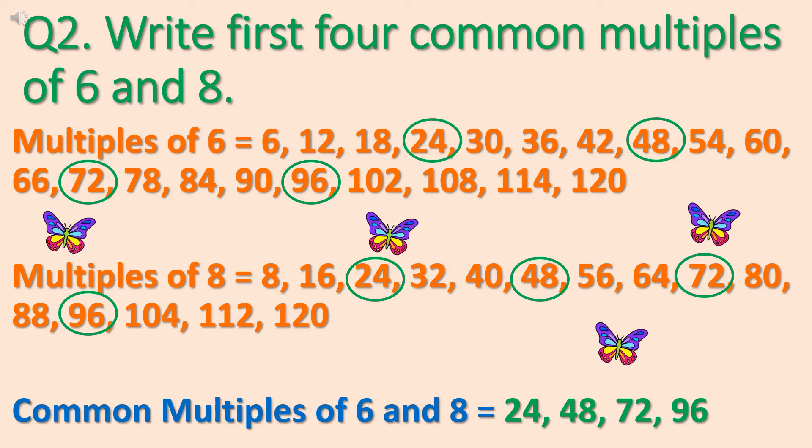Now again we will write multiples of 6. So multiples of 6 are 6, 12, 18, 24, 30 and so on. You can find out the multiples of 6 by multiplying 6 by different numbers.